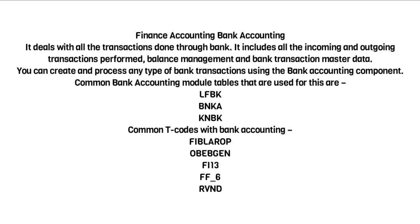Common bank accounting module tables: LFBK, BNK, KNBK. Common T-codes for Bank Accounting: FE13, FF6, RVND.